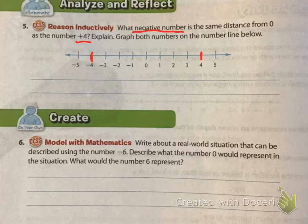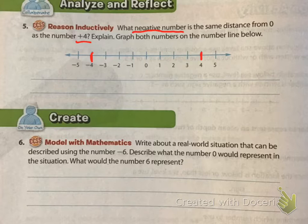Write a real-world situation that can be described using the number negative 6, and describe what zero would represent. Ms. Diaz had a class in which six people were tardy. What would zero mean in that situation? Zero people were tardy. Zero just means you don't have that. If you win 50 bucks, what does zero mean? You didn't lose money, you didn't win money.